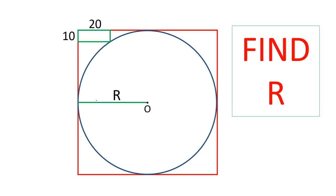We have to find out the radius of this circle. There is a small rectangle at the corner of the square and the sides of the rectangle are 10 and 20. Now, let's try to find out the radius. Let's see how we can solve this question.